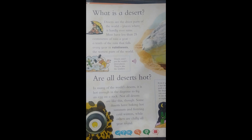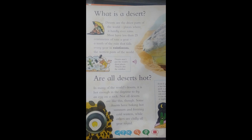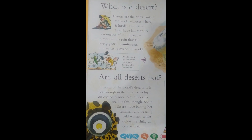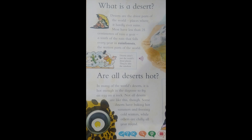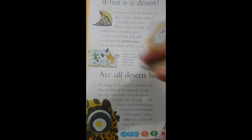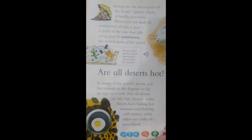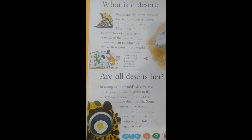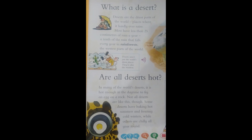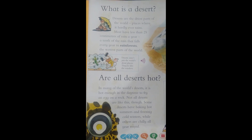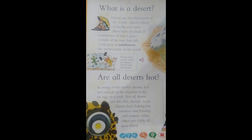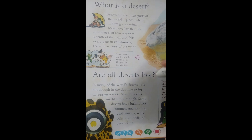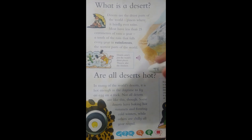A rainforest is a dense evergreen forest where a lot of rain falls. Deserts aren't just the world's driest places — they're also the windiest. Okay, next: are all deserts hot?